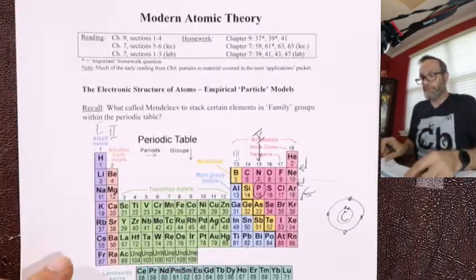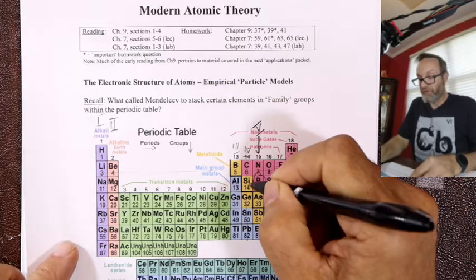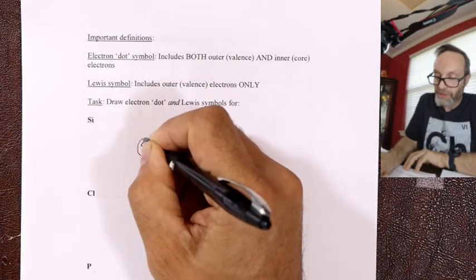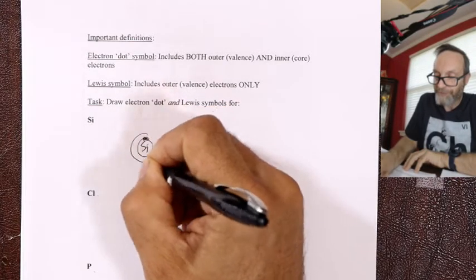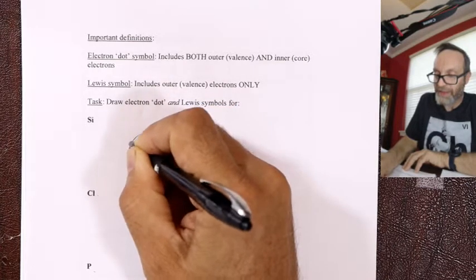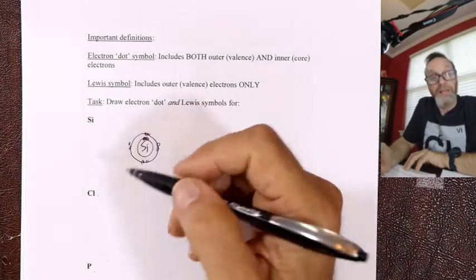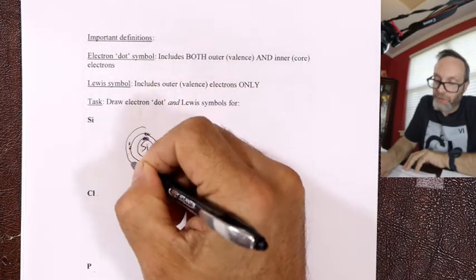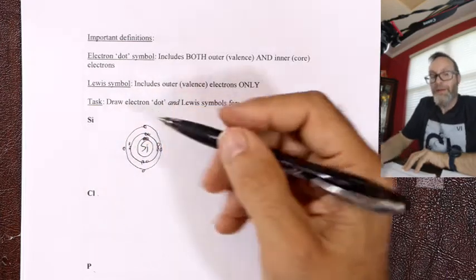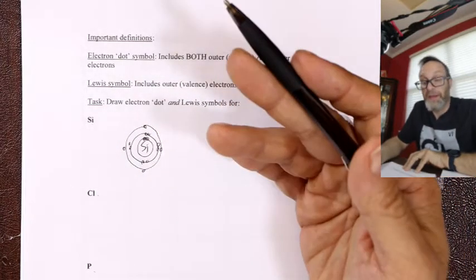Silicon is in column 4, row 3, with 14 electrons. Counting up: 1, 2 fills layer one (2 electrons); 3 through 10 fills layer two (8 electrons). I've filled the first two layers with 10 electrons. It's element number 14, so I've got four more to go: 1, 2, 3, 4 on the outside. Battleship: three layers, four on the outside. That's silicon's dot diagram.